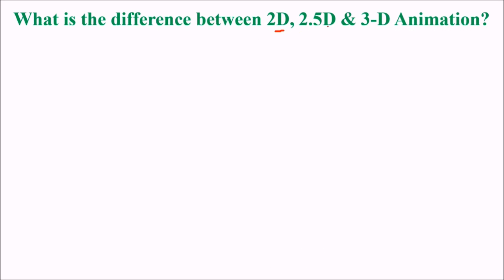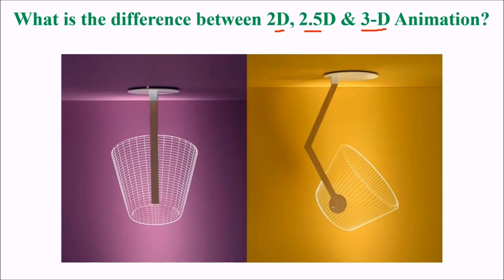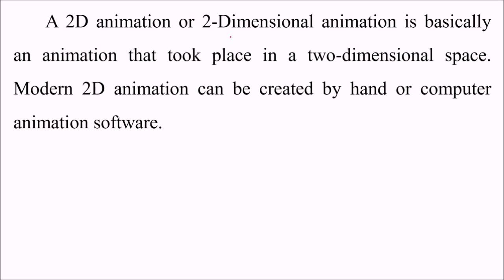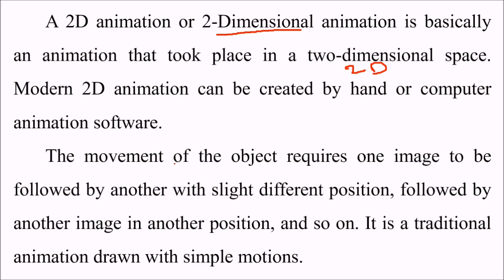What is the difference between 2D, 2.5D, and 3D animation? There are two views and different dimensions here. A 2D animation, or two-dimensional animation, is basically an animation that takes place in a 2D space. Modern 2D animation can be created by hand or with computer animation software. The movement of the object requires one image to be followed by another with a slightly different position, and so on, at some FPS.